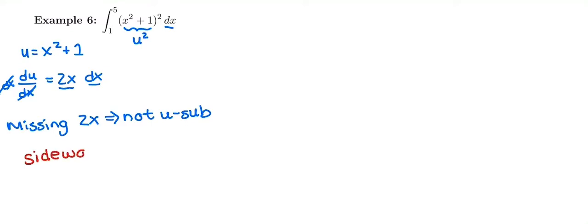We know 5 squared is 5 times 5, 6 squared is 6 times 6, so x squared plus 1 squared must mean it's x squared plus 1 times x squared plus 1. Squaring just means you multiply it by itself. So I'm going to square this out to actually figure out what's in the integrand.